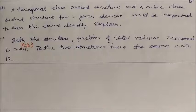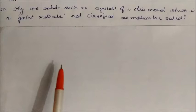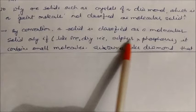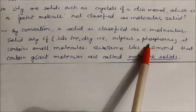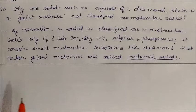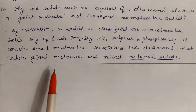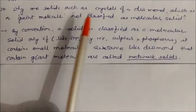Why are solids such as crystals of diamond, which is a giant molecule, not classified as molecular solids? By convention, a solid is classified as a molecular solid only if it contains small molecules — for example, iodine, sulfur, or phosphorus. Substances like diamond contain giant molecules. That's why they are called network solids, not molecular solids. Diamond does not have small molecules; it forms an extended network — a giant molecule — and is therefore classified as a network solid.